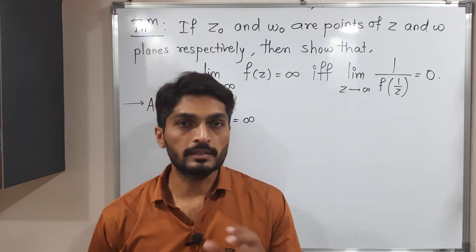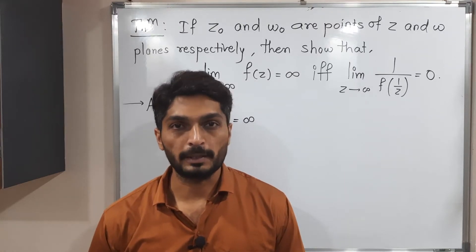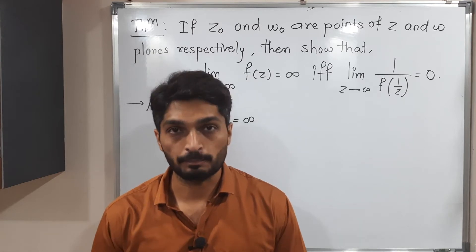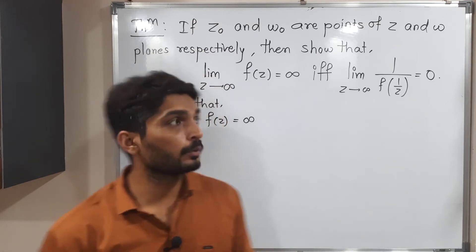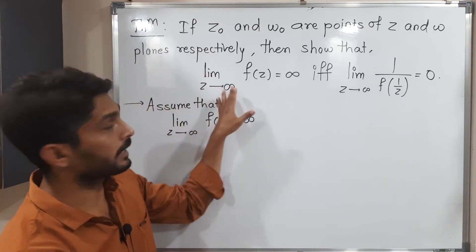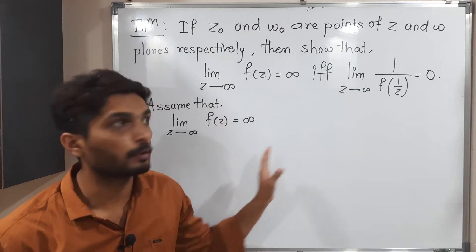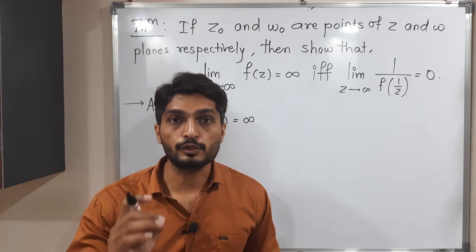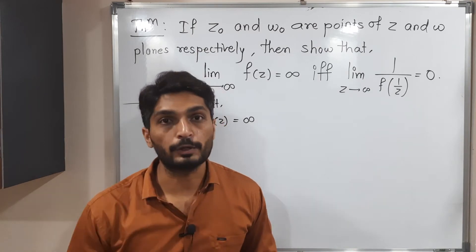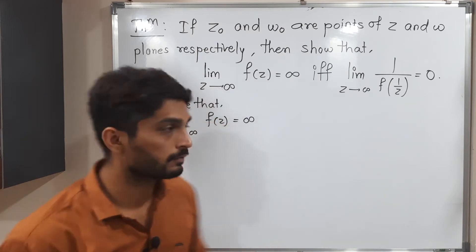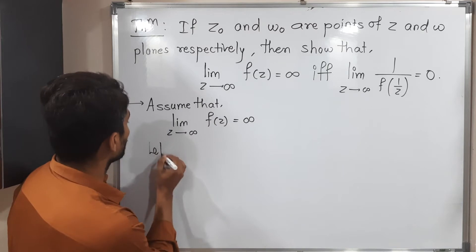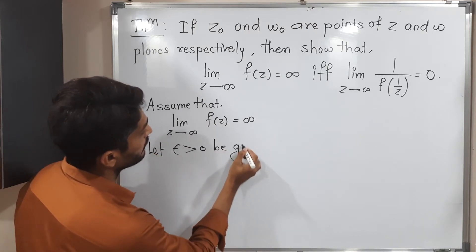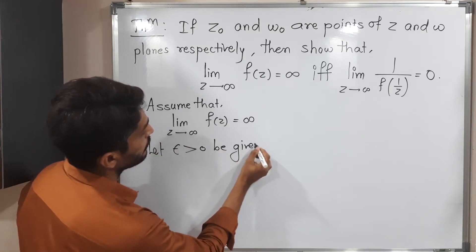Let us discuss this very interesting theorem of limits. We have to prove an if-and-only-if statement. I'm going to assume the first part, as you can see on the screen, and prove the second part using the epsilon-delta definition of limit. So let us take epsilon — let epsilon greater than zero be given.